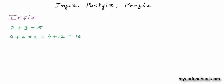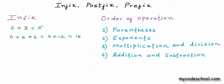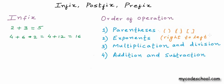This ambiguity is solved by following the operator precedence rule. In an algebraic expression, the precedence we follow is: first preference is given to parentheses or brackets, next to exponents. In case of multiple exponentiation operators, we apply them from right to left — so if we have something like 2^3^9, the rightmost exponentiation is applied first, reducing it to 512. If you apply the left operator first, it evaluates to 64.